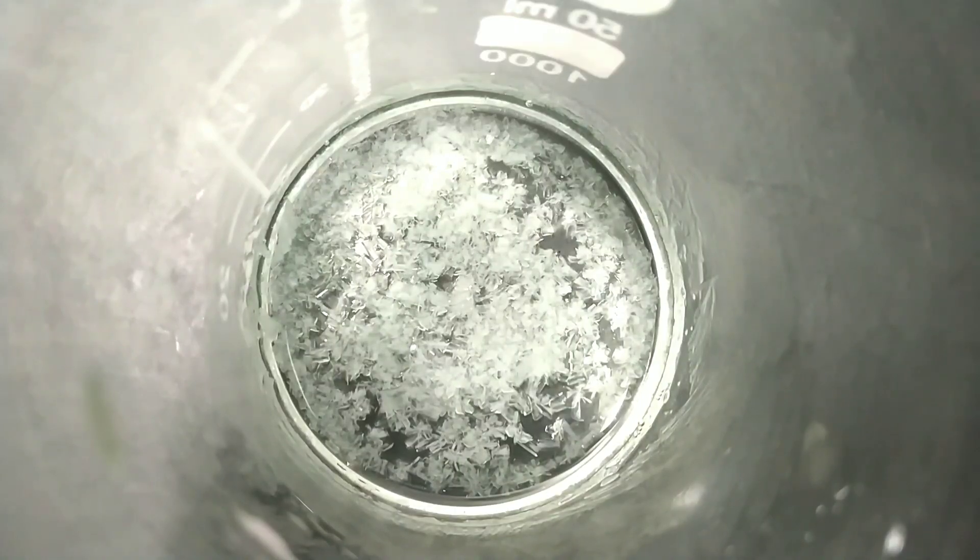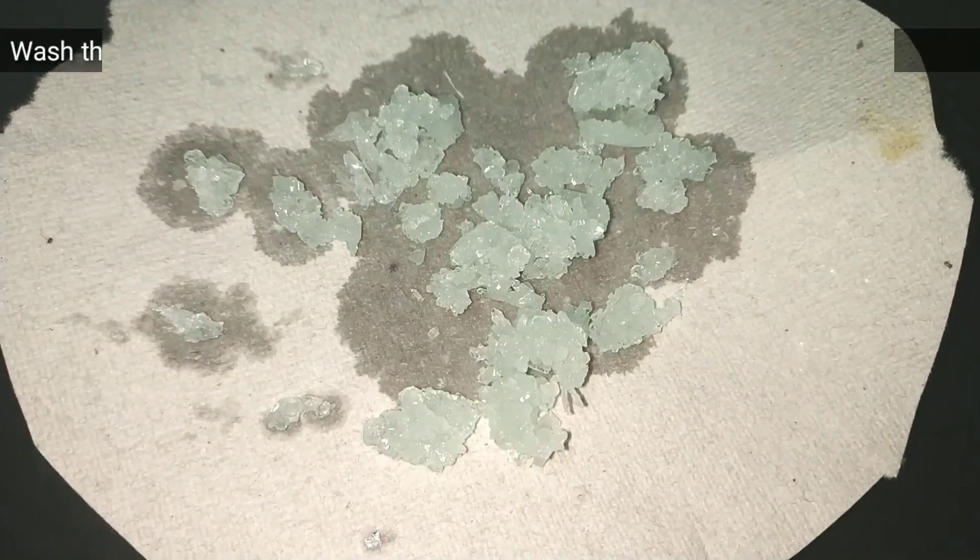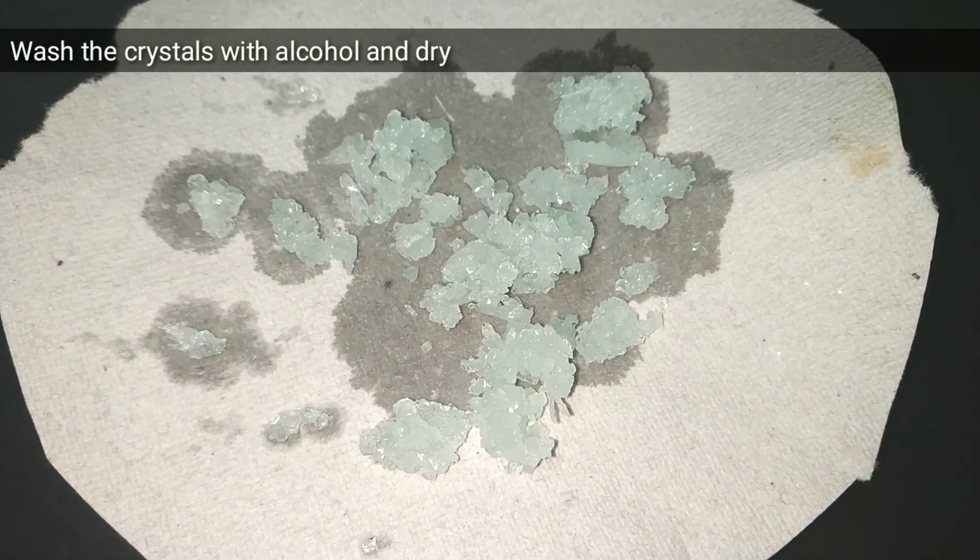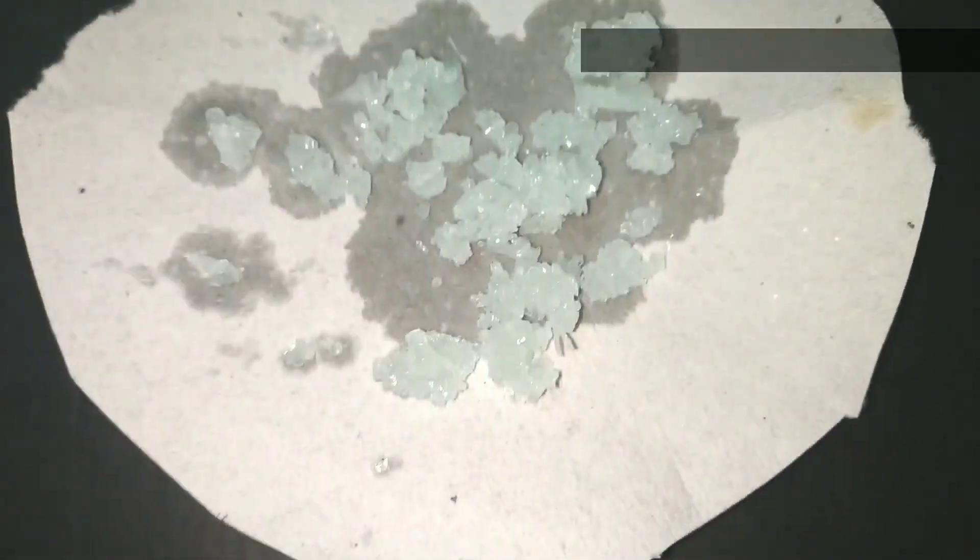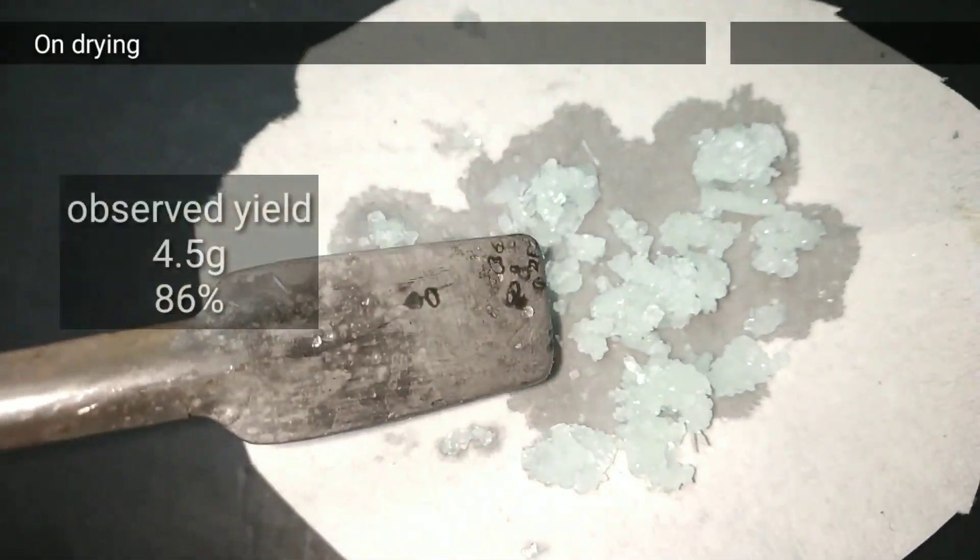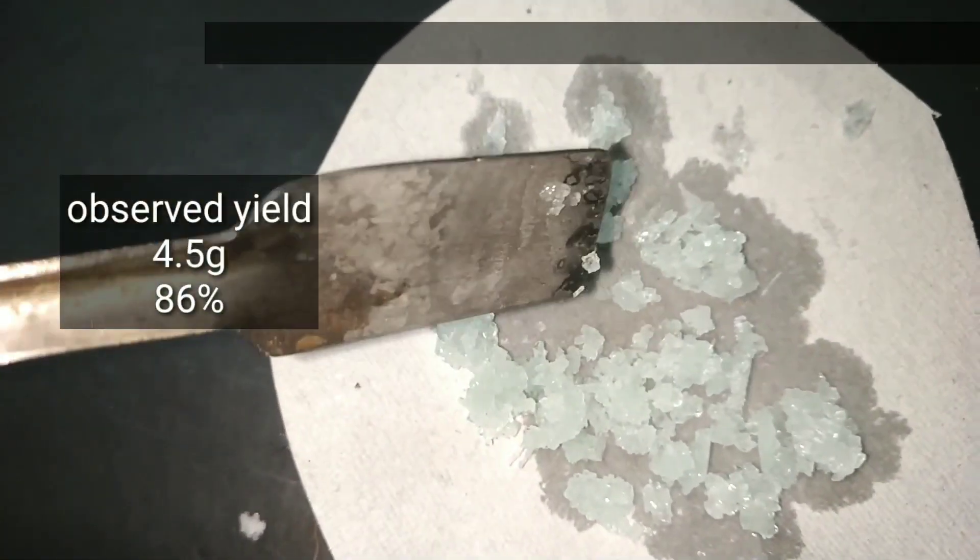Now we can decant the solution and wash the crystals with alcohol and we dried the crystals. I got about 4.5 grams of ferrous ammonium sulfate or ammonium iron 2 sulfate.